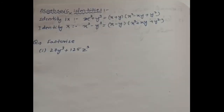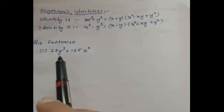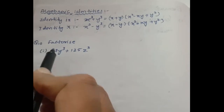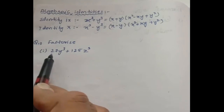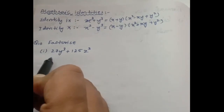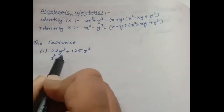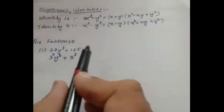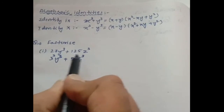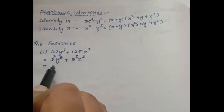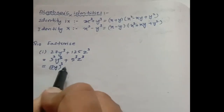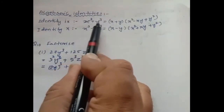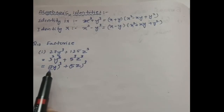As homework, you should write both identities five times. Now, based on this we have two problems today. We start with the first one: 27y cube plus 125z cube. Now, 27 can be written as 3 cube — since 3 times 3 is 9, and 9 times 3 is 27 — so 27y cube becomes 3 cube into y cube. And 125 can be written as 5 cube — since 5 times 5 is 25 and 25 times 5 is 125 — giving us 5 cube into z cube. Combining, we get 3y whole cube plus 5z whole cube.